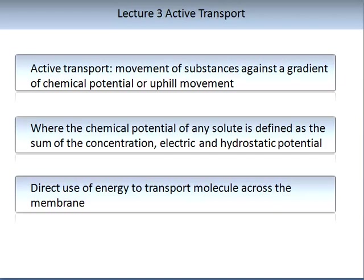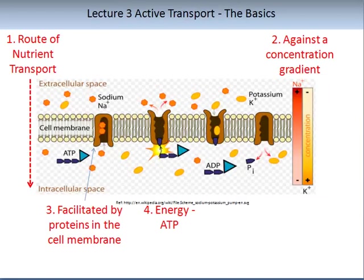The last mechanism to explore is active transport. Active transport can be defined as the movement of substances against a gradient or chemical potential — that is, it is an uphill movement. The chemical potential of any solute is defined as the sum of the concentration, electric and hydrostatic potential. This encompasses the chemistry and physics of active transport: the direct use of energy to transport a molecule across the membrane.